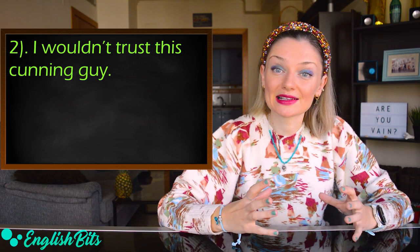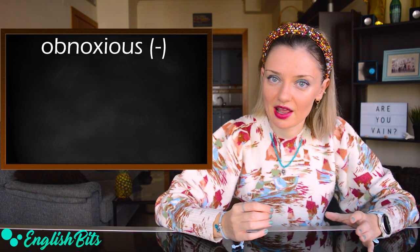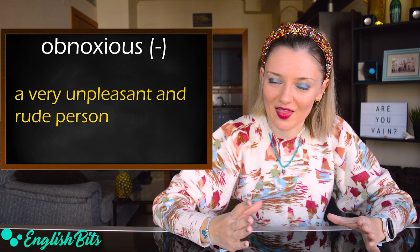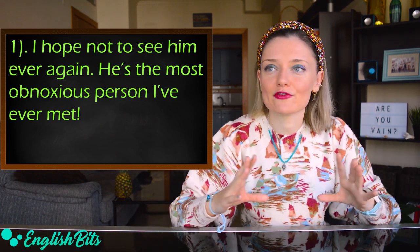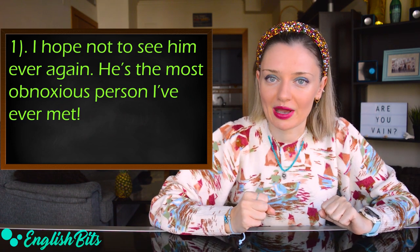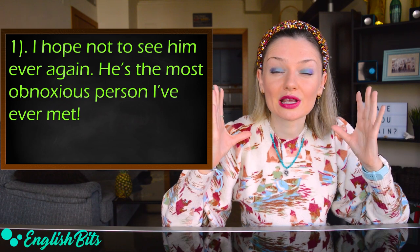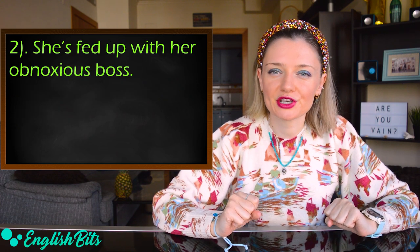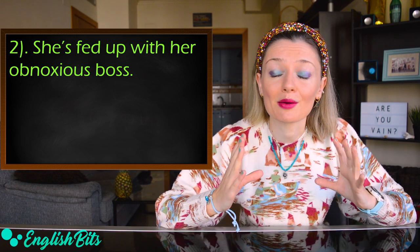Let's move on to our second negative personality adjective, which is obnoxious. It describes a very unpleasant and rude person. For example: He's the most obnoxious person I've ever met — I hope not to see him ever again. And another: She's fed up with her obnoxious boss.